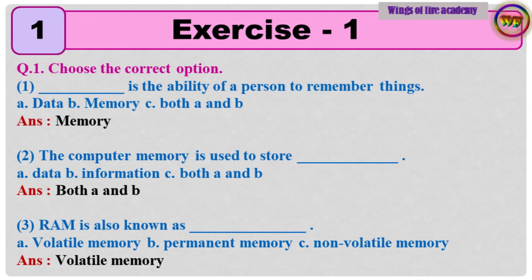Question number 1, choose the correct option. Question 1: Dash is the ability of a person to remember things. A. Data, B. Memory, C. Both A and B. Answer: Memory.